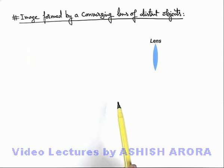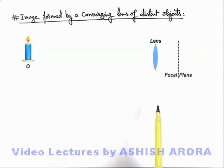And we know well that if an object is placed far away from the lens, its image will be produced in its focal plane. Say this is the focal plane of the lens on which the image of this object will be produced.